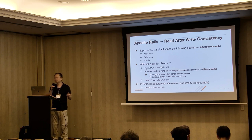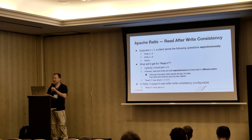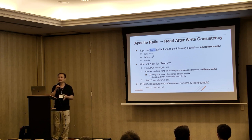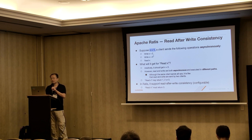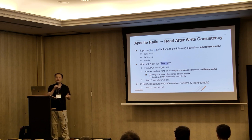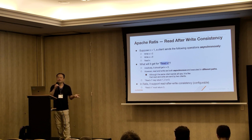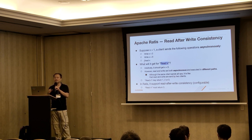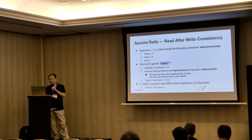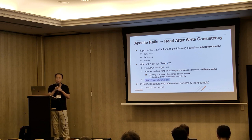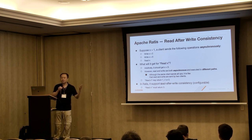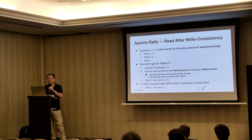In practice, we also support read-after-write consistency. For example, suppose X is set to 1. Then I send the following requests asynchronously: Y execute 2, Y execute 3, and then read X. What will the read X return? Intuitively we think it should return 3, but the problem is that we're doing this asynchronously, and read and Y are on two different paths. It may be the case that even though the read is sent later, it can be executed earlier than Y. So in this case we may return either 1, 2, or 3. In Ratis, we support write-after-read consistency — it is configurable, and if enabled, it will always return 3.